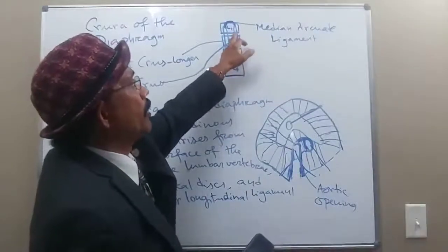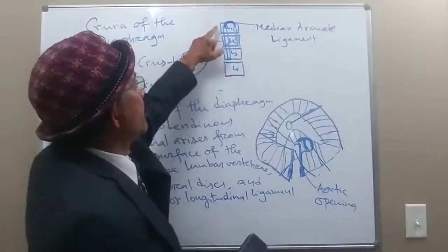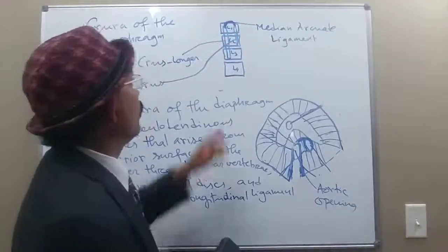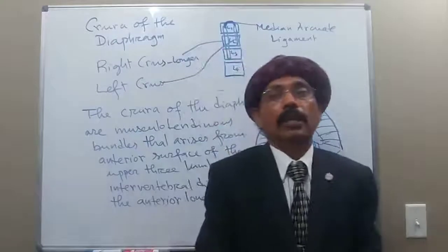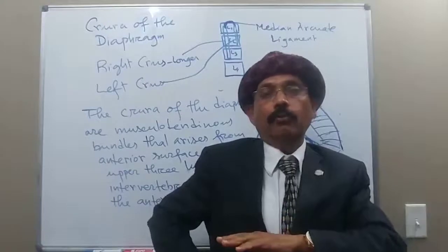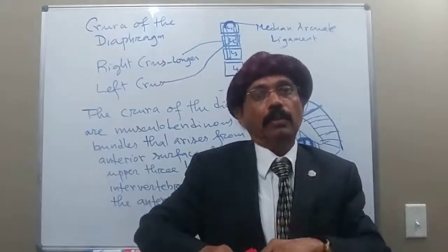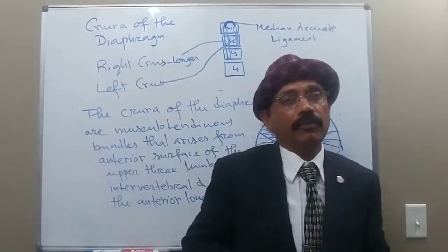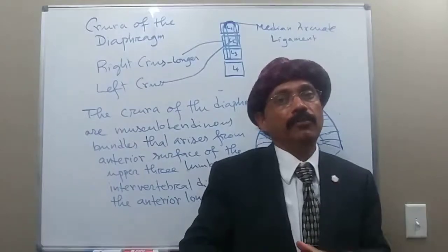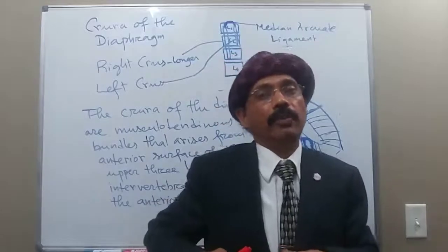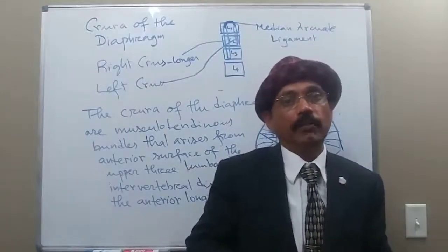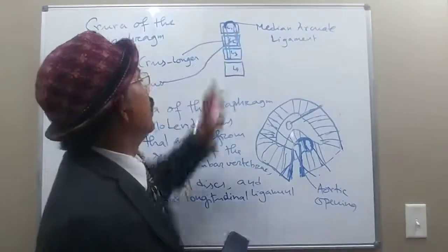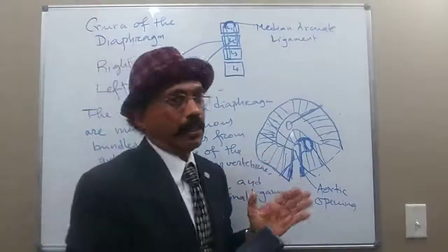To summarize: the left crus arises from L1, L2, intervertebral disc, and anterior longitudinal ligament. The right crus arises from L1, L2, L3, and possibly L4. The right crus is longer than the left because our right lobe of the liver is larger. During inspiration the diaphragm needs more strength to pull the right lobe of the liver down, so the right crus works against more resistance and is therefore stronger and larger.